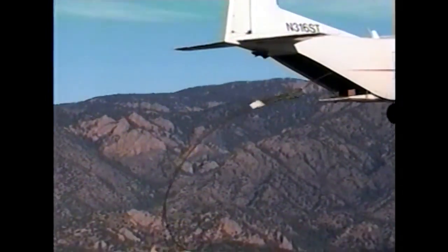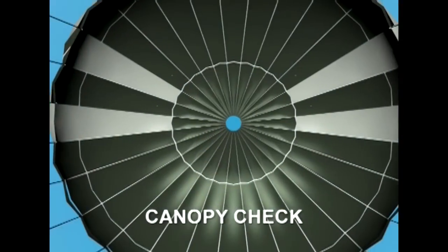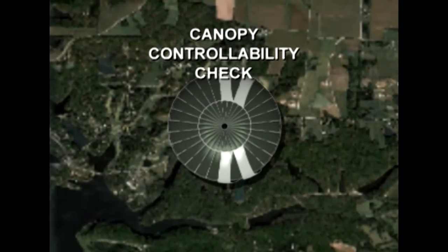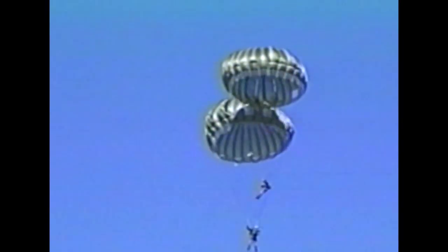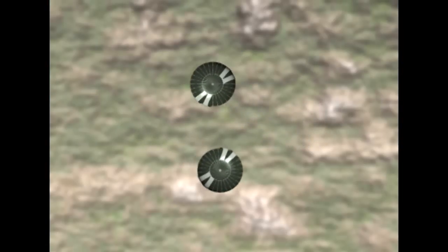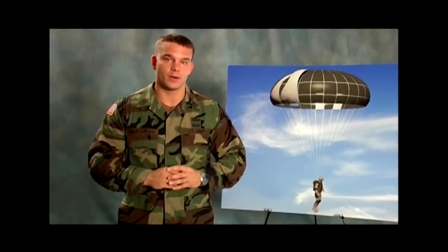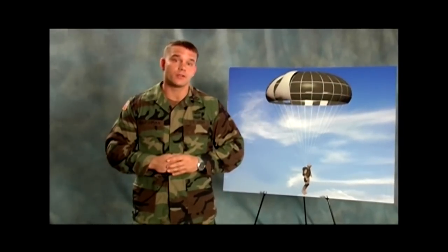Experienced canopy pilots apply a few basic rules and procedures on every jump. After exiting and completing the first three points of performance — good tight body position and count, check canopy and gain canopy control, and keep a sharp lookout during descent — conduct a canopy controllability check: look left and turn left 90 degrees, then look right and turn right 90 degrees. Immediately after, locate your group leader and the landing area. Maintain at least 50 feet of separation between canopies and remember the three rules of the air: look before you turn, turn right to avoid head-on collisions, and the lower jumper has the right of way. If a collision cannot be avoided, spread your arms and legs to prevent entanglement in the other jumper's suspension lines.